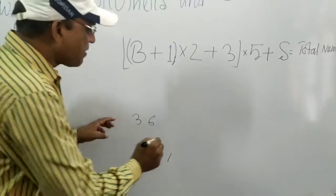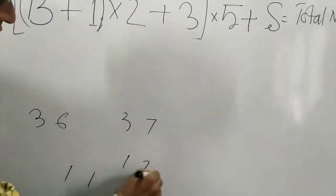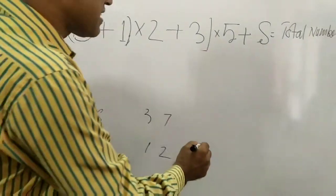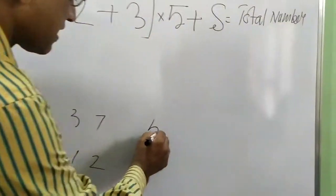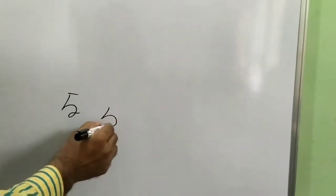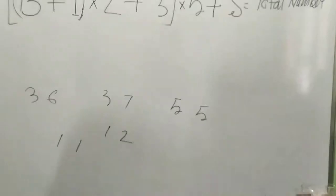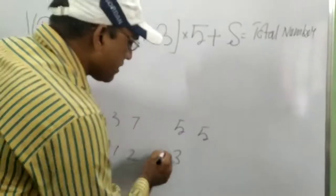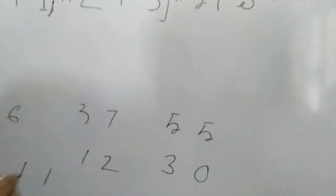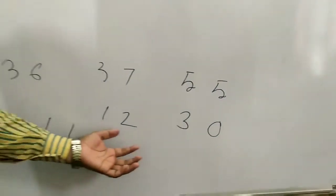If the result is 37, then 1 brother and 2 sisters. If the result is 55, suppose 55, then 3 brothers and 0 sisters.